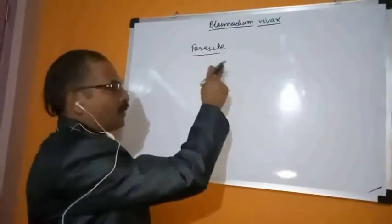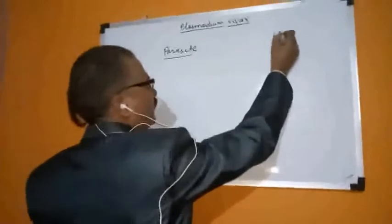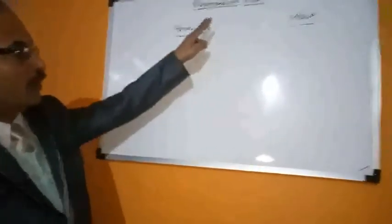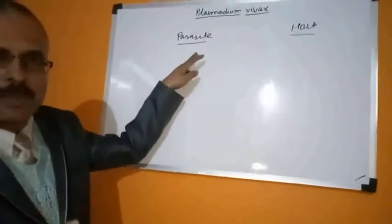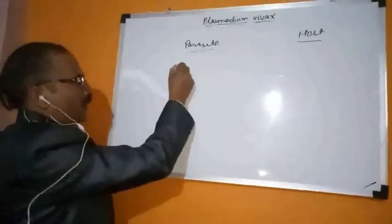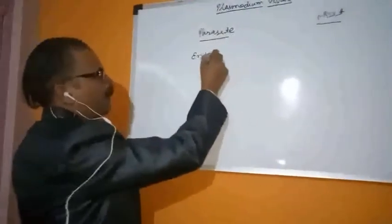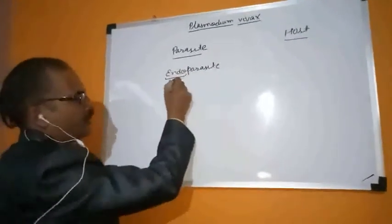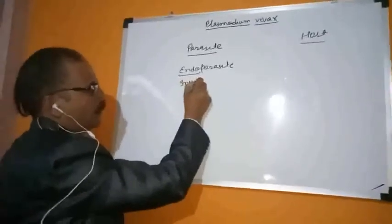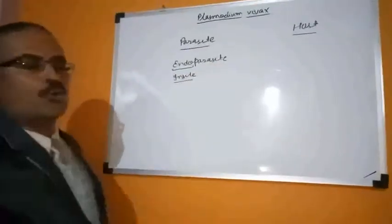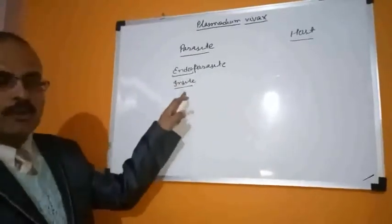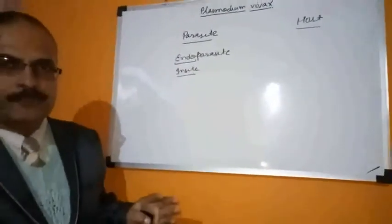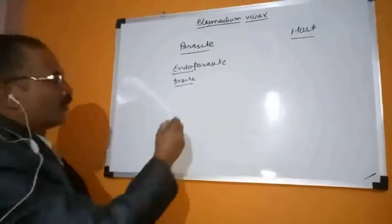The organism which provides food to the parasite is given the name host. Now, which type of parasite is Plasmodium vivax? Plasmodium vivax is an endoparasite. Endo stands for inside, meaning it remains inside the body of an organism or host. That is why it is given the name endoparasite.